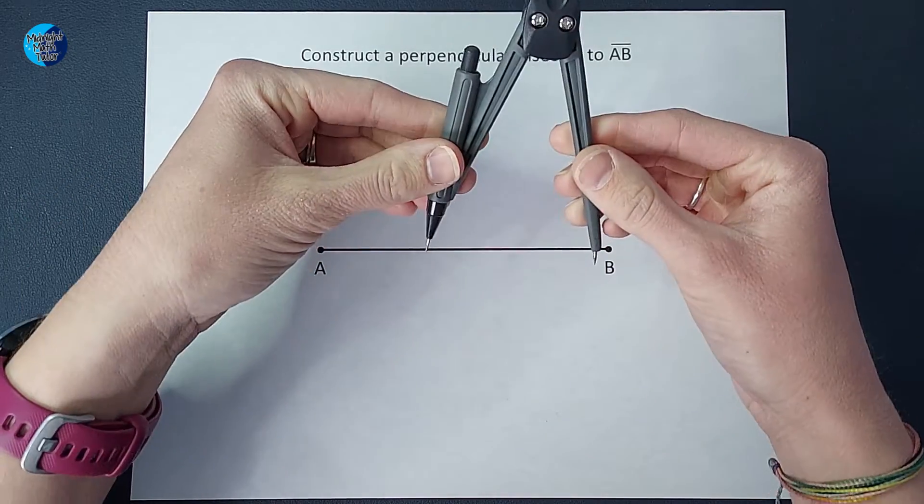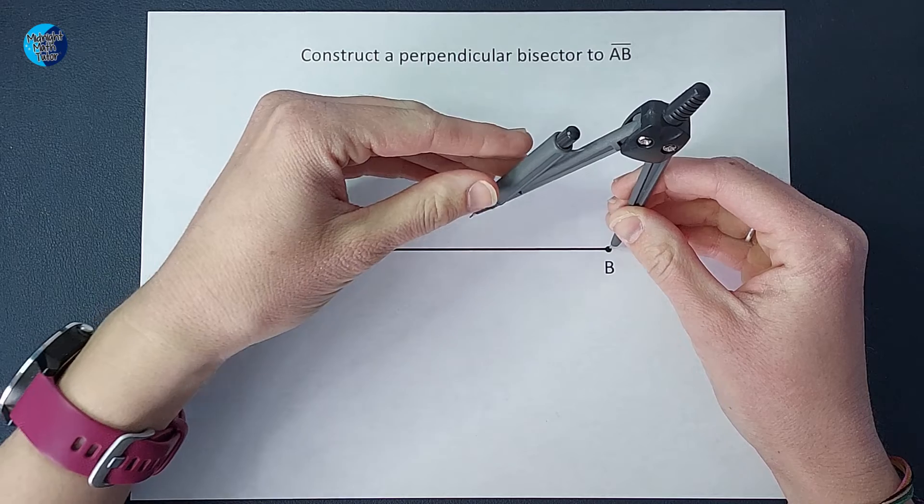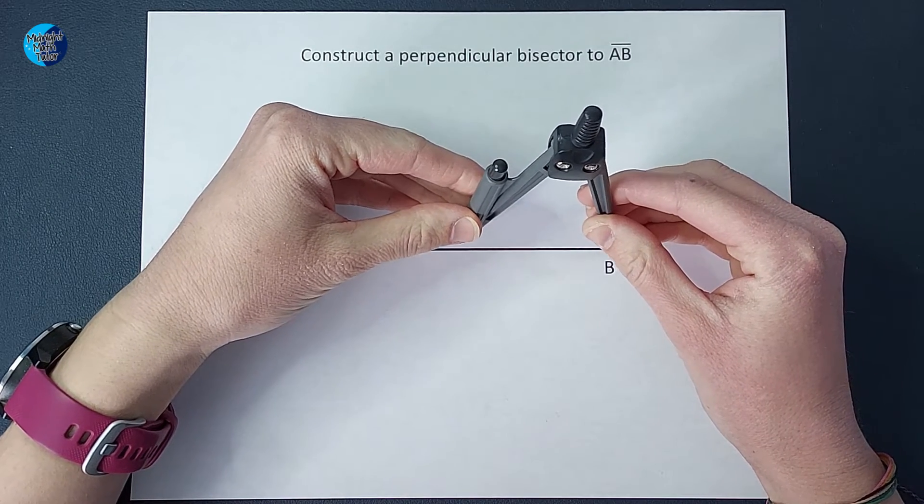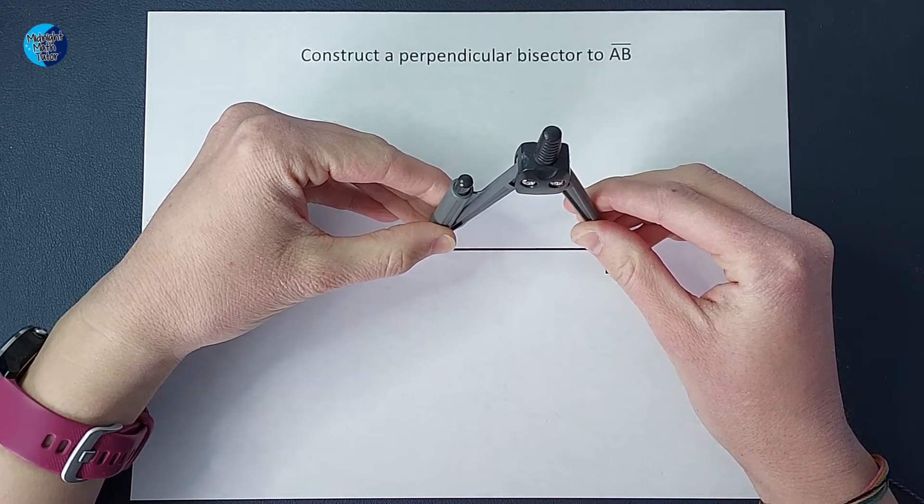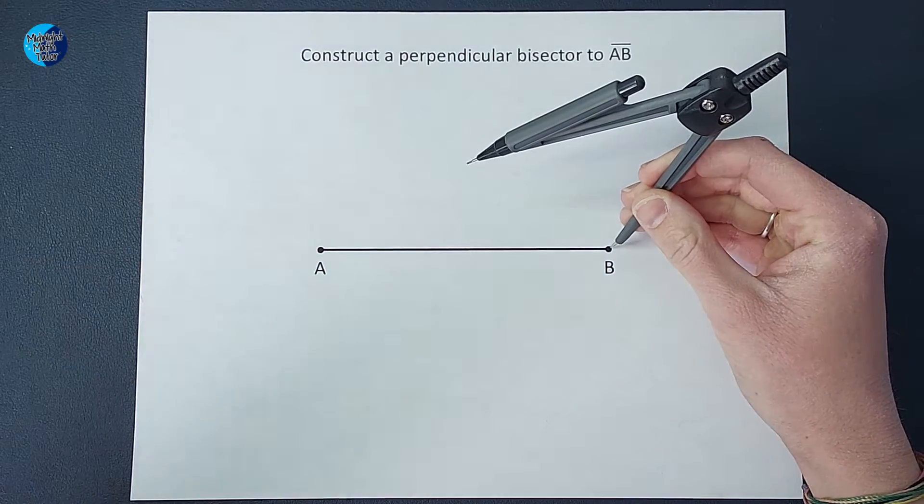So what we're going to do is set our compass on one of our points. Doesn't matter if you start right or left. And we want it to be open to bigger than the halfway point. Now, obviously we don't know exactly where the halfway point is. That's what we're looking for.